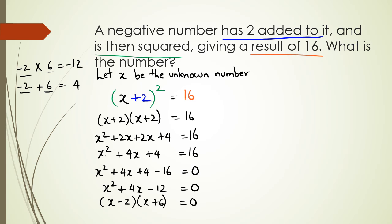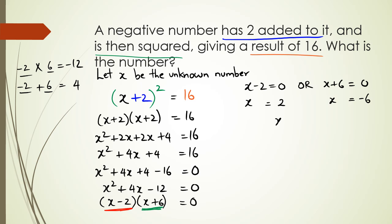As we've seen in previous videos in this series, one of these brackets has to equal zero. So either x - 2 = 0, giving x = 2, or x + 6 = 0, giving x = -6.